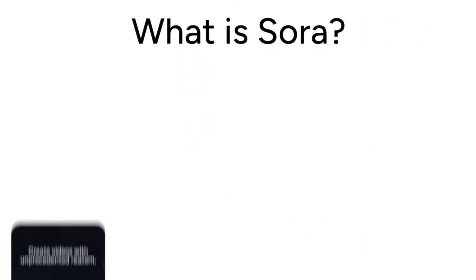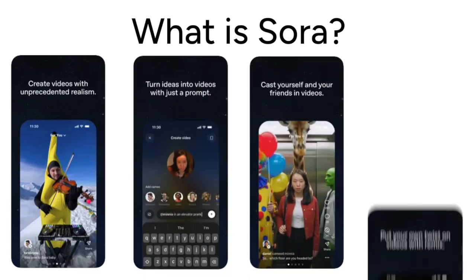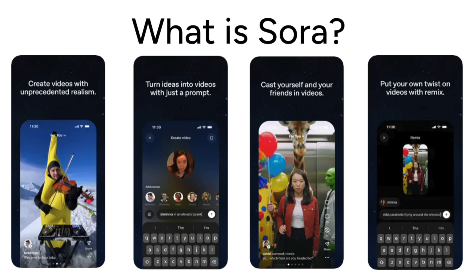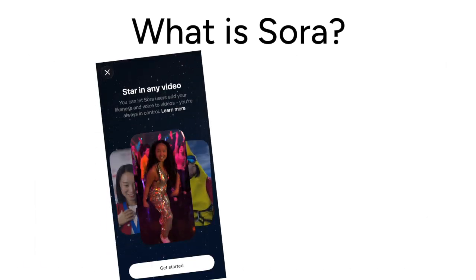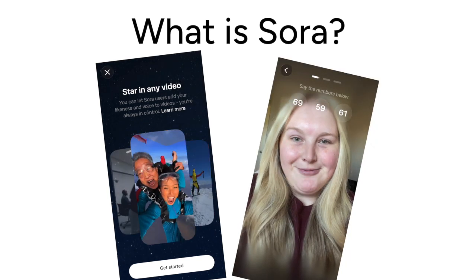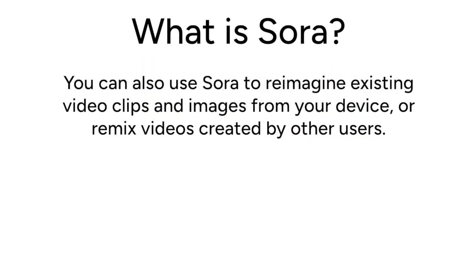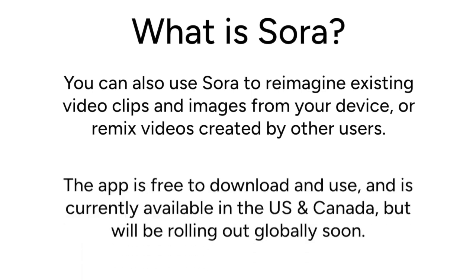What is Sora? Sora is a very cool and innovative AI app that allows users to generate video clips. These videos can feature their own likeness and those of public figures, like your favorite social media influencers. This is done through a feature called Cameos, that allows you to create a digital representation of yourself that can be used for your own videos and shared with others, so you can be a character in your friends' video creations. You can also use Sora to reimagine existing video clips and images from your device, or remix videos created by other users. The app is free to download and use, and is currently available in the US and Canada, but will be rolling out globally soon.